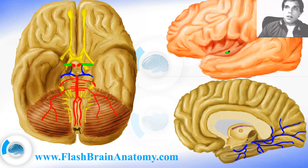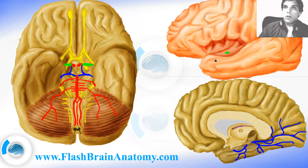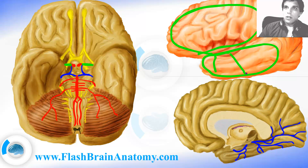After it exits the insula, it spreads all over the place. It supplies the frontal lobe, the parietal lobe, and the temporal lobe. However, we can easily group these arteries into two groups: the inferior ones and the superior ones. The ones that go downwards and supply the temporal lobe are the inferior ones.